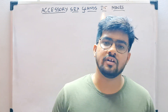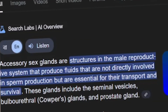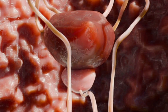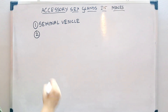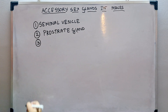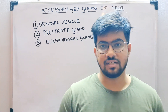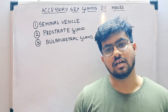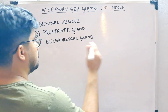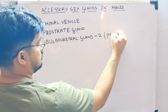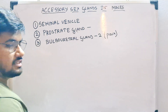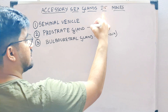There are mainly three types of accessory sex glands. The first one is the seminal vesicle, the second one is the prostate gland, and the third one is the bulbourethral gland. Together they are known as the accessory sex glands. The bulbourethral glands are present in two — so they are a pair — while the prostate gland is present as one and the seminal vesicle is also one.